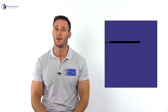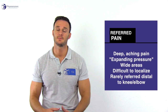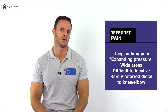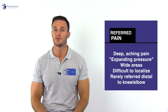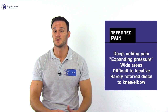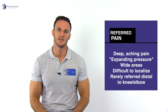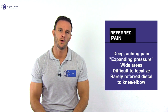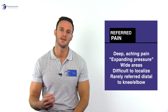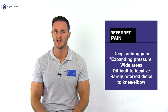At last, referred pain is typically described as deep aching pain, sometimes like an expanding pressure, into wide areas that are difficult to localize. In contrast to radicular pain, it is rarely referred into areas distal to the knee or elbow. The deep aching quality is due to the stimulation of unmyelinated type 4 or C fibers that inform the central nervous system about the amount of damage, and is often called secondary hyperalgesia.